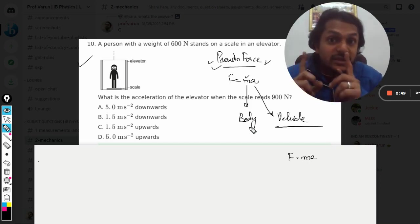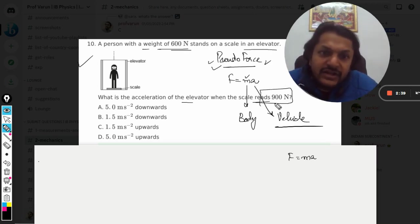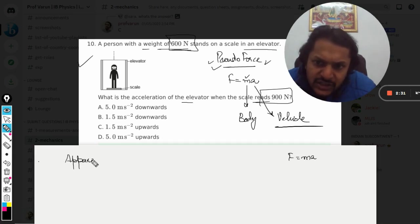Now as per this question is concerned, the person of the weight 600 Newton stands on a scale in an elevator. Now what is the acceleration of the elevator when the scale reading goes up and it becomes 900 from 600?